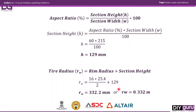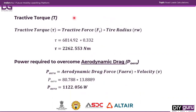Now we calculate the tractive torque by multiplying the tractive force by the tire radius. This gives a tractive torque of 2262.553 Newton-meters. This is a very large number, but since we also have a gearbox, the torque requirement from the motor itself is much lower than what the vehicle actually requires at the tires. We will explore that later.